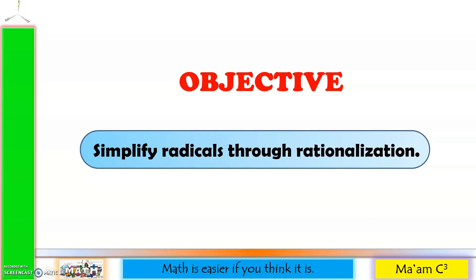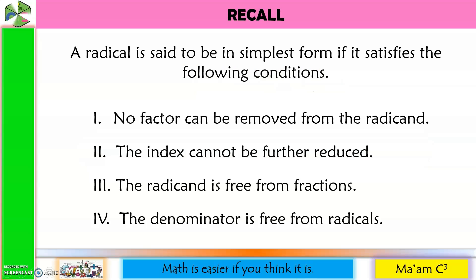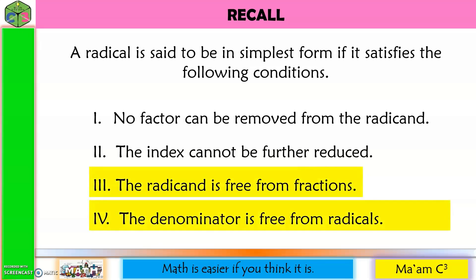Our objective in this lesson is to simplify radicals through rationalization. Here are the conditions for a radical to be considered in simplest form. We already have separate videos for conditions 1 and 2. Now we are going to talk about 3 and 4: the radicand is free from fractions, and the denominator is free from radicals.